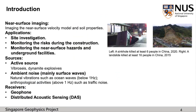Near surface imaging means imaging the near surface velocity model and soil properties. Among the many geophysical near surface imaging methods, seismic survey using the propagation of elastic waves to image the subsurface is the most widely used method. These are the applications of near surface imaging. Site investigation means before construction, engineers need to have an accurate understanding of the near surface geology condition and soil properties.